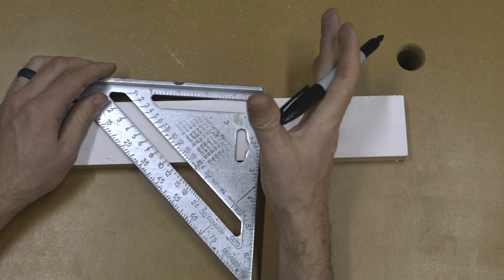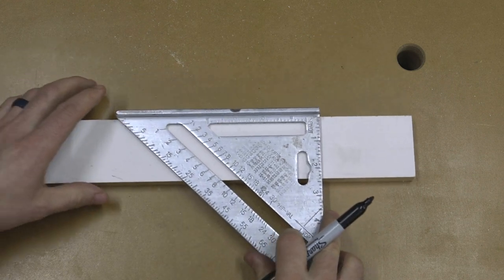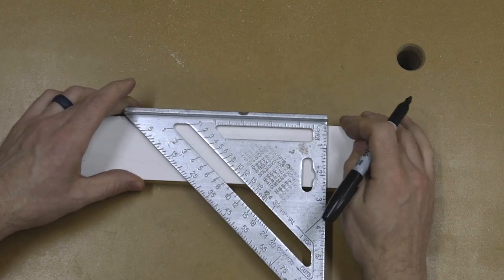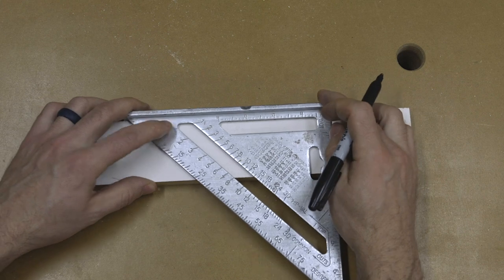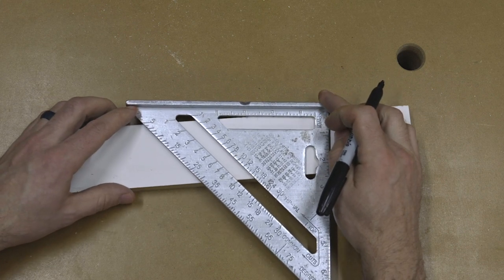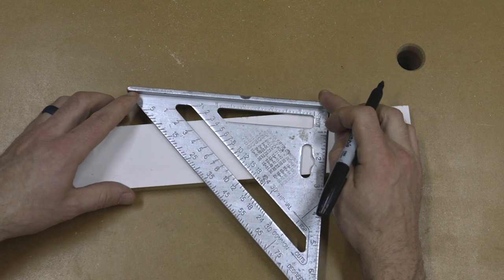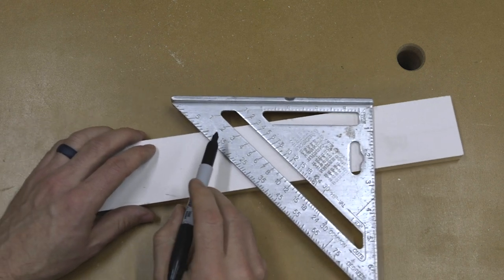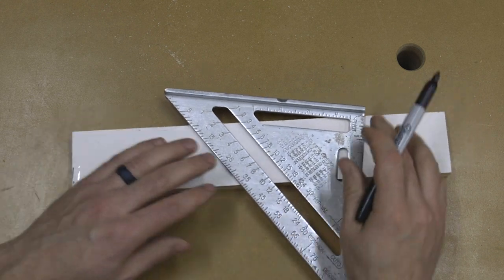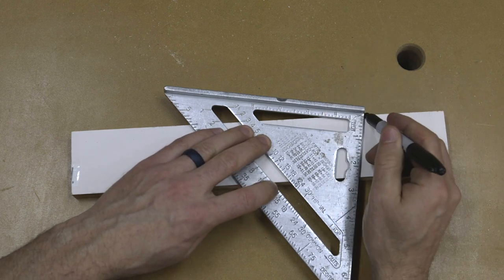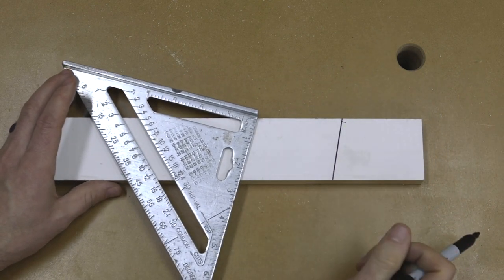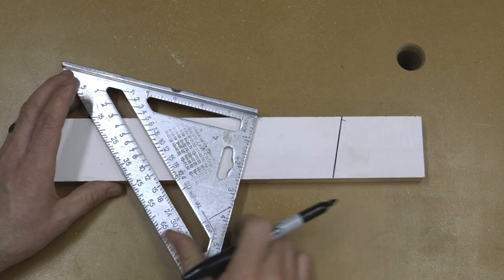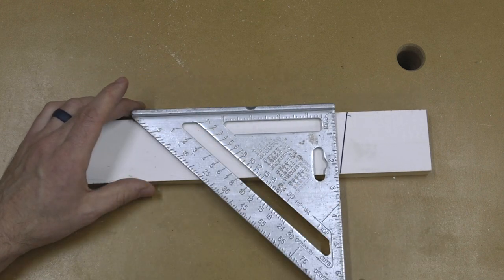So if I'm looking to make a 10-degree cut, all I have to do is line up the speed square with the top of the material. Using the pivot point, I'm going to swing this to 10 degrees. So my pivot point is on the top, my 10-degree mark here is also on the top edge of the board. So there's 10 degrees. I draw a line. Now I know when I cut this, it's a 10-degree angle.